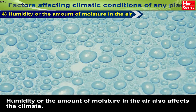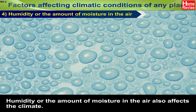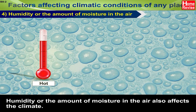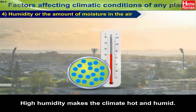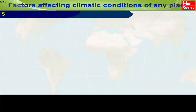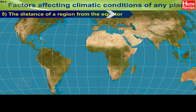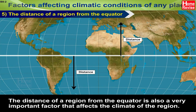4. Humidity or the amount of moisture in the air also affects the climate. 5. High humidity makes the climate hot and humid. The distance of a region from the equator is also a very important factor that affects the climate of the region.